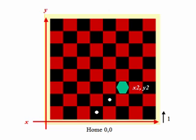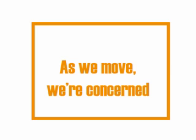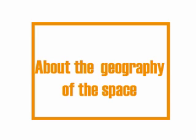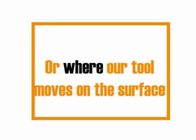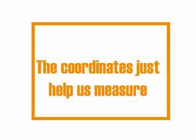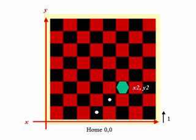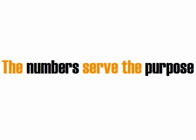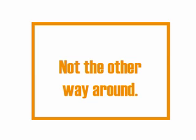We're now at X2 Y2, where we instruct the drill to drop another hole. As we move, we're concerned about the geography — where our tool moves on the surface of our material. The coordinates we use — X0 Y0, X2 Y negative one, whatever they may be — just help us measure and instruct our tools to build the designs we want. The numbers serve our purpose, not the other way around. We are using math to enable manufacturing, not learning numbers just for the sake of numbers.